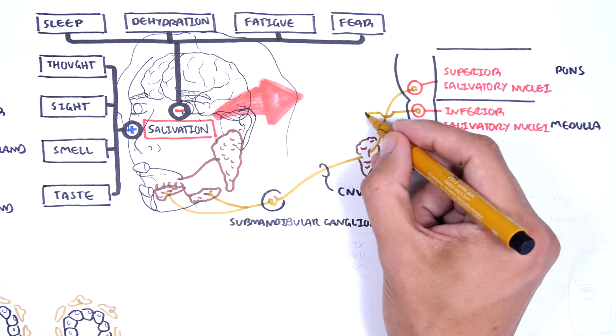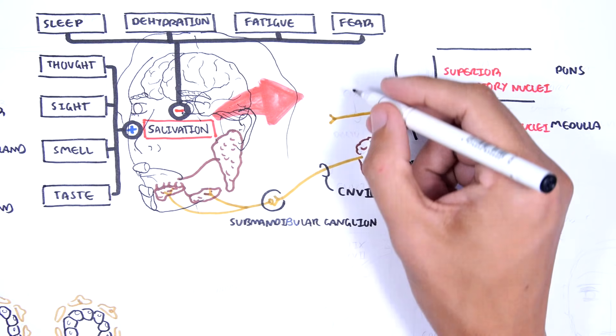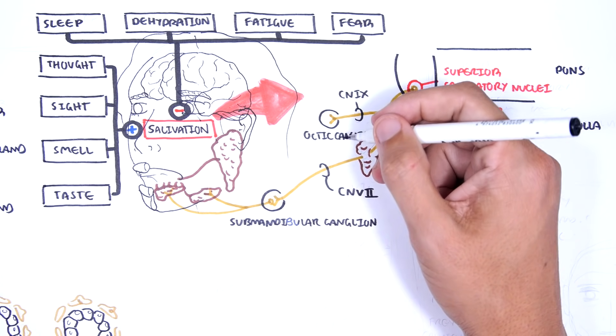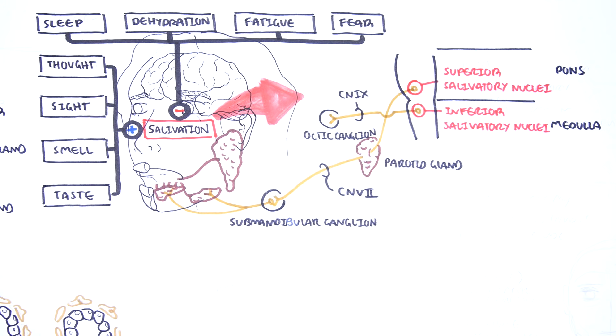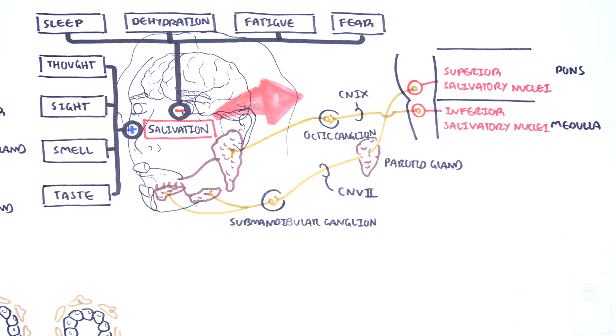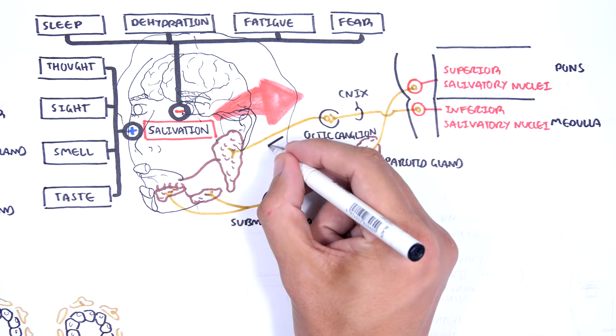From the inferior salivatory nucleus, the parasympathetic tone is via the glossopharyngeal nerve which synapses with a second neuron at the otic ganglion. From here the nerve will stimulate parotid glands to produce saliva.